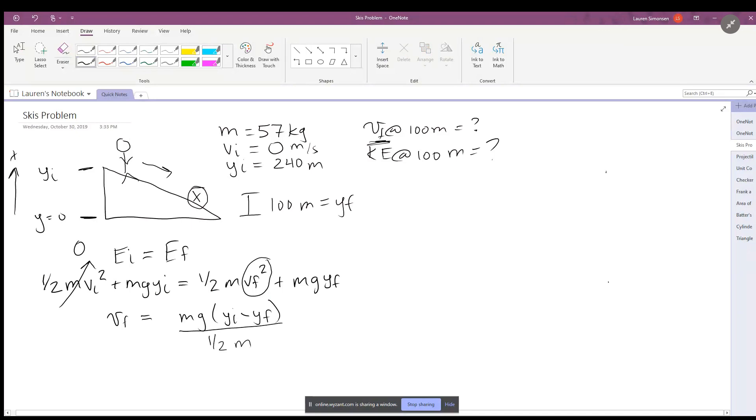Divide by one half and then we take the square root. To simplify this, m's cancel and we are left with square root of 2g times y initial minus y final.